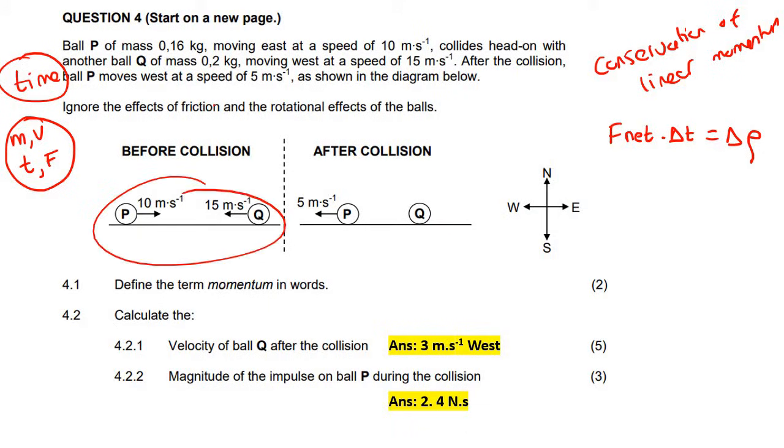Whenever we have two objects, they might talk about impulse, and in fact they will. So the first question is define the term momentum. Momentum is the product of mass and velocity. Momentum equals mass times velocity.